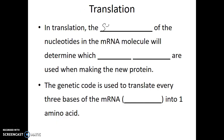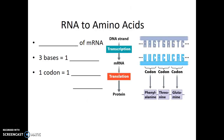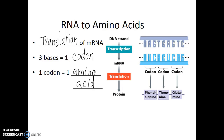In translation, the sequence of the nucleotides in the mRNA molecule will determine which amino acids are used when making the new protein. The genetic code is used to translate every three bases, or every three nucleotides of the mRNA — which we call a codon — into one amino acid. Every three nucleotides on the mRNA equals one codon, and each codon then corresponds to a single amino acid in the resulting protein that we will form.